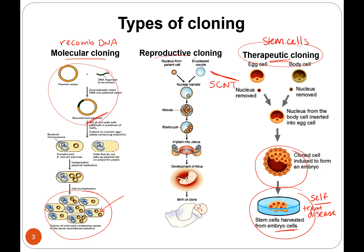Reproductive cloning is the idea of making an identical offspring. We don't do this with humans — at least we're not supposed to — but we do do this with animals, so we'll talk about that.